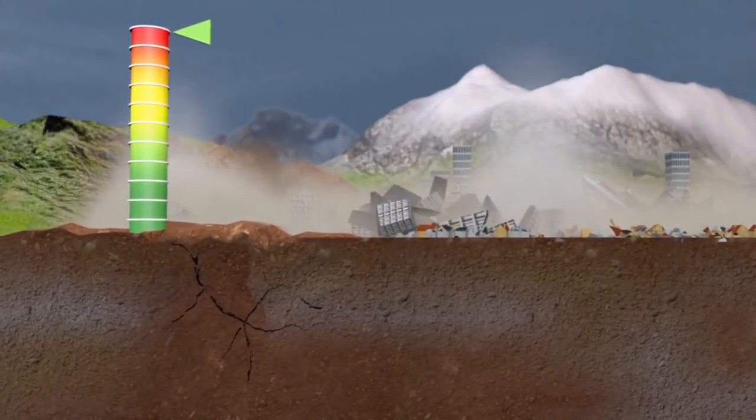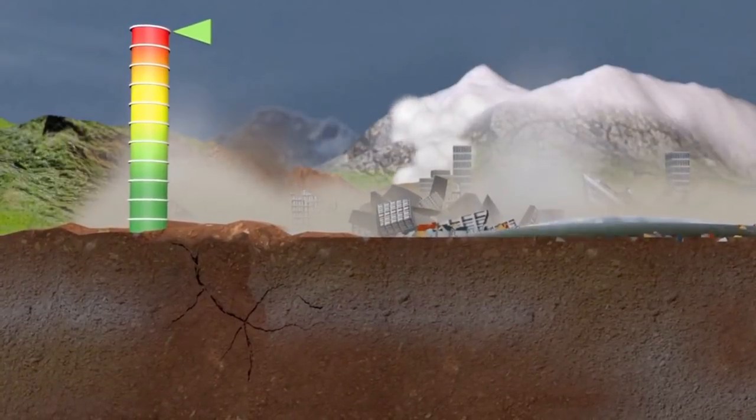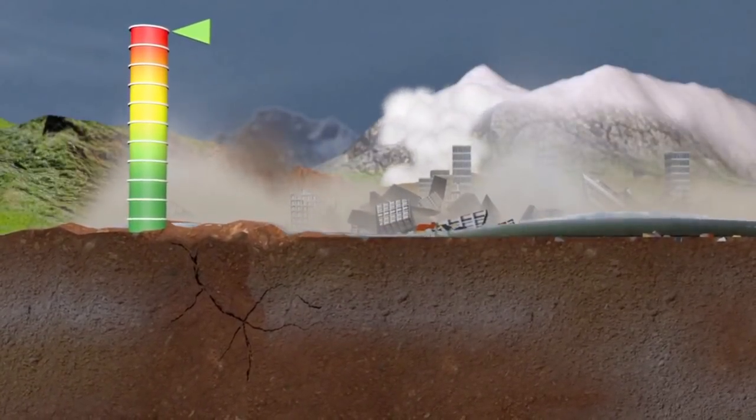When a big quake strikes, the scale acts as a warning against other natural phenomena which could be triggered, such as landslides, avalanches, or tsunamis.